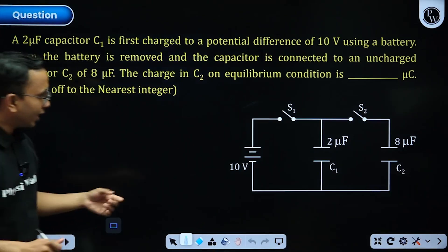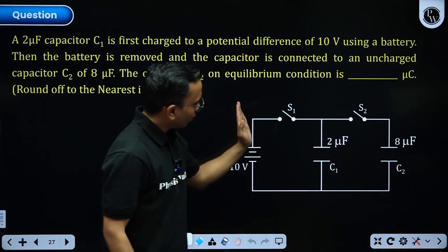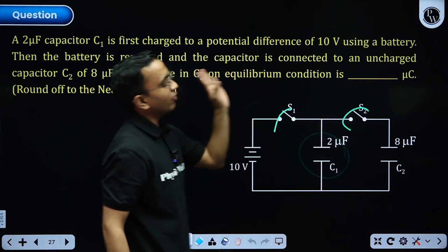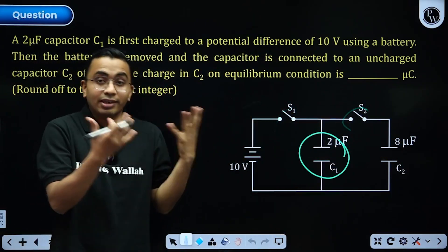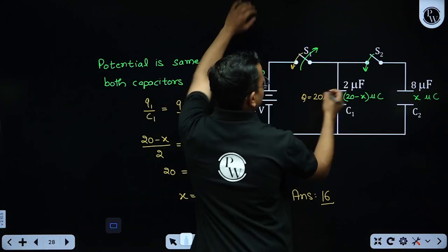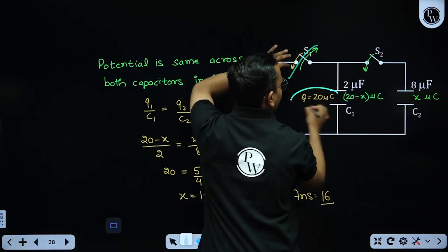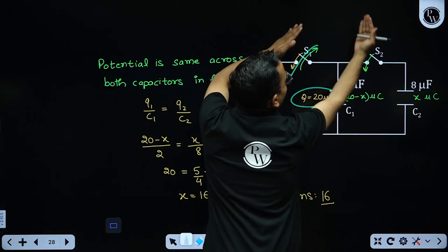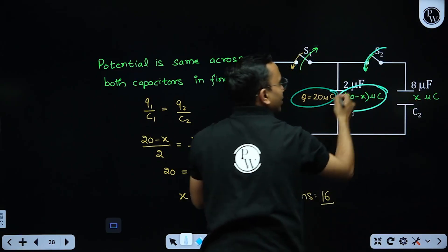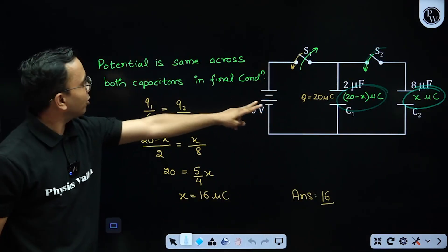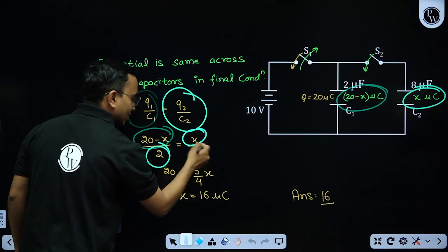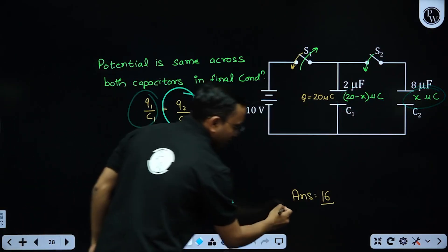Next question: switch S1 is closed, charging a capacitor to 10 × 2 = 20 µC. Then S1 is opened and S2 is closed. Let X µC transfer to the 8 µF capacitor. The remaining charge on the 2 µF capacitor is (20 − X). Since both are now in parallel, Q1/C1 = Q2/C2 gives (20 − X)/2 = X/8. Solving, X = 16. The answer is 16 µC.